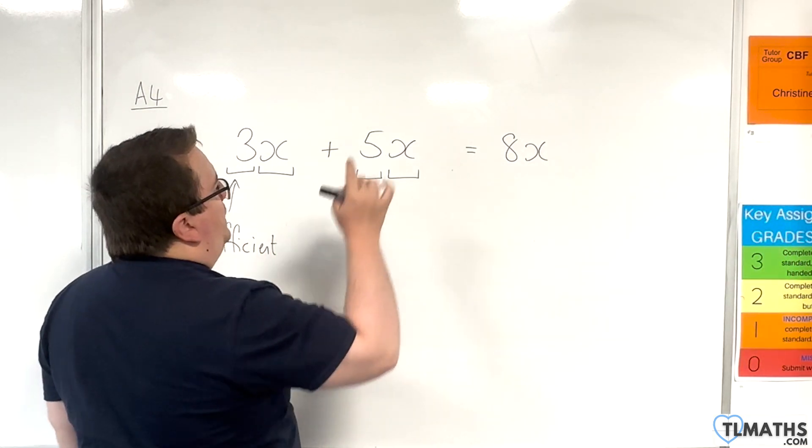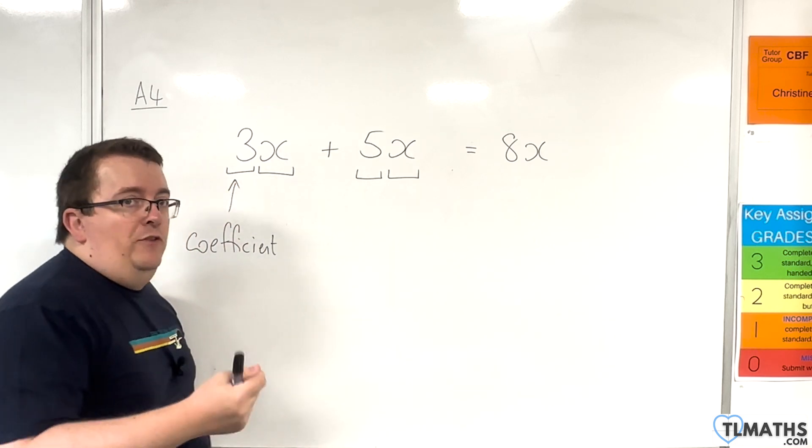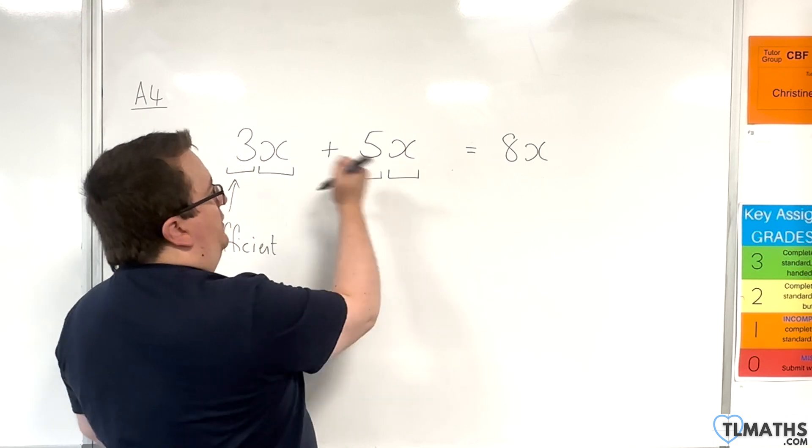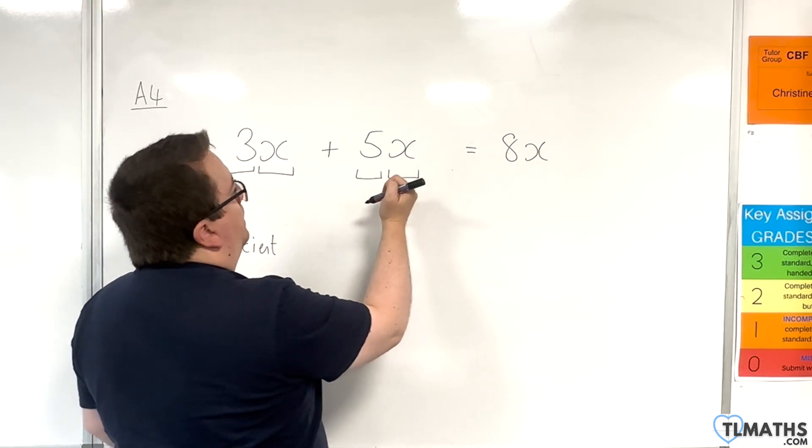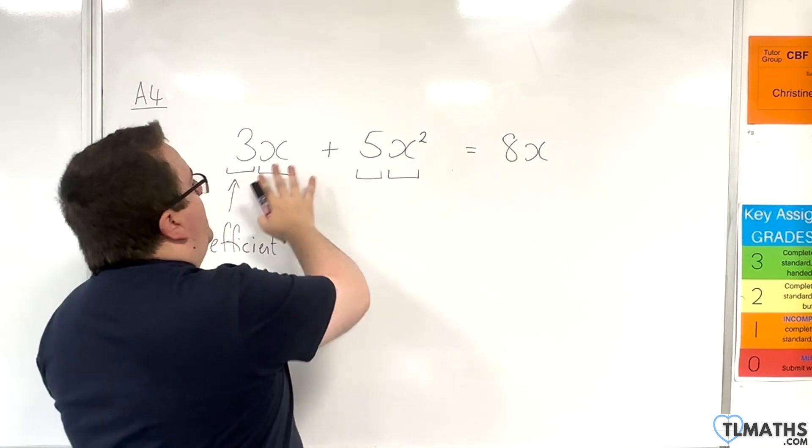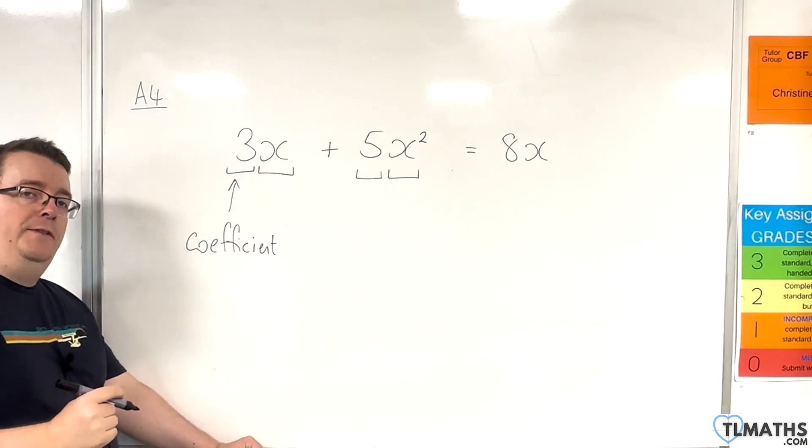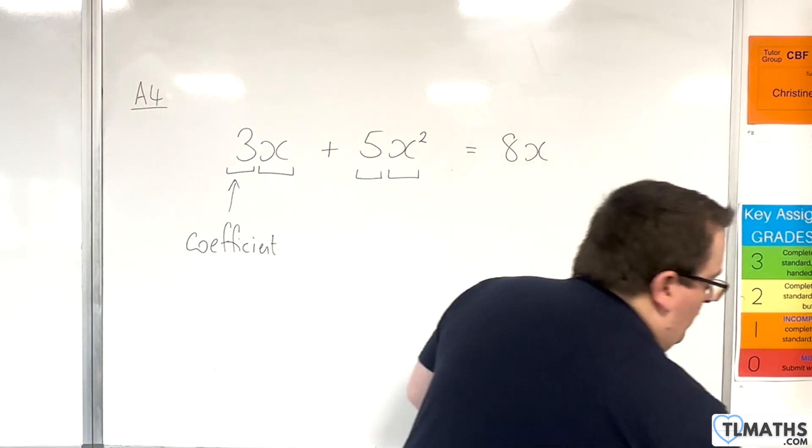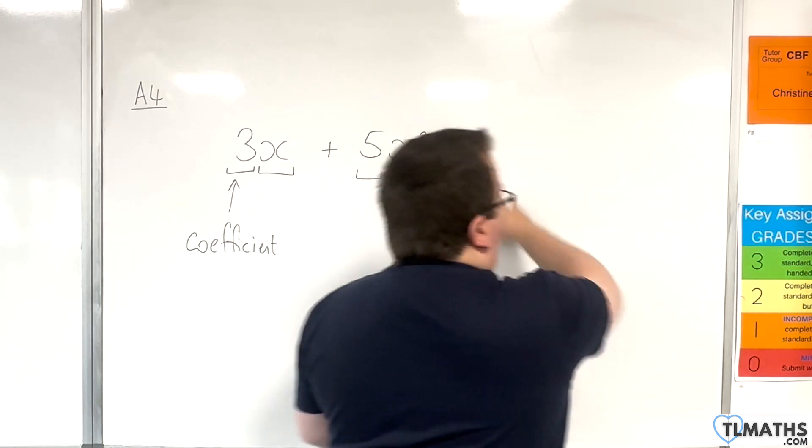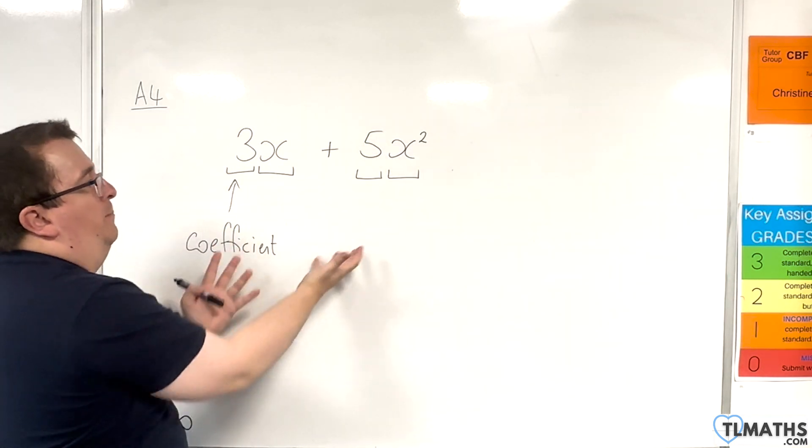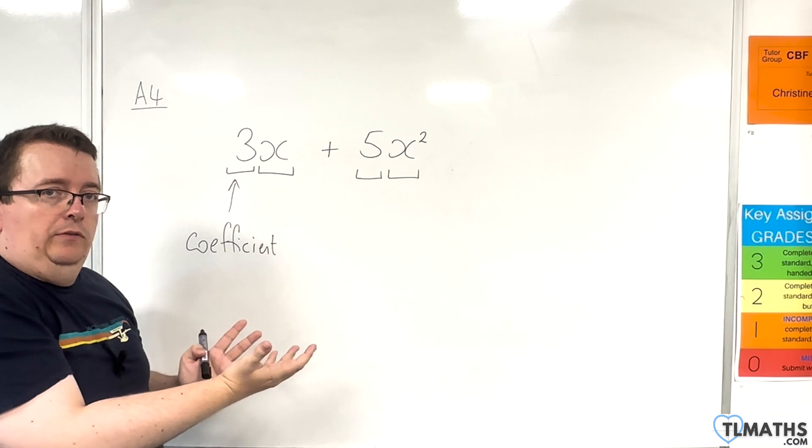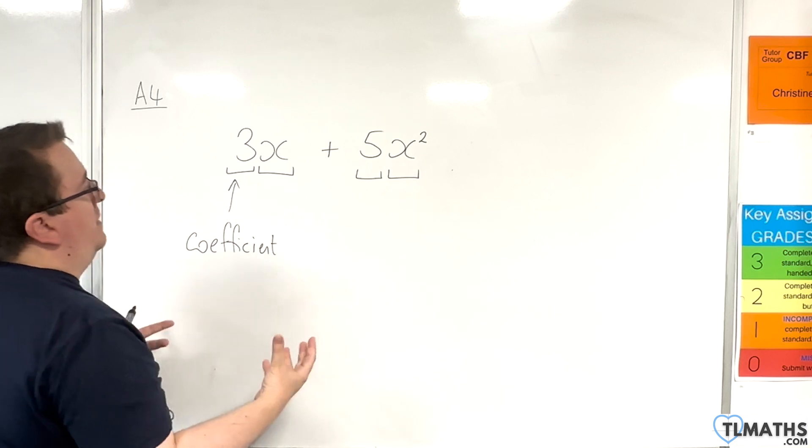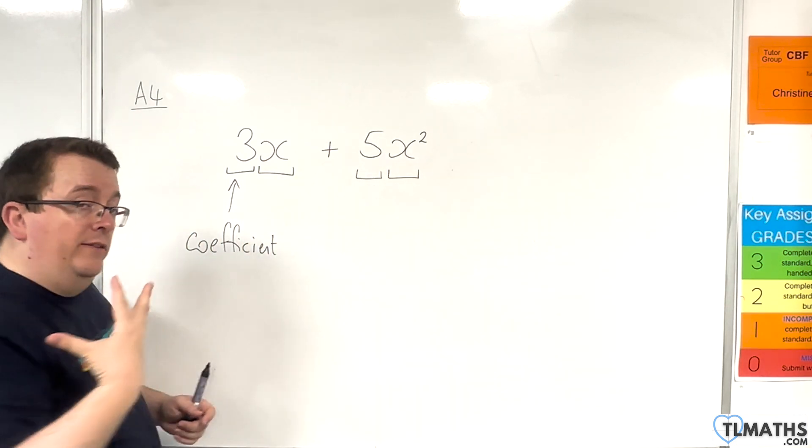Now, if the algebra bit is slightly different, and it doesn't matter how slightly different it is, you cannot combine the terms, you cannot collect them. So if I change this to 3x plus 5x squared, the algebra bit is different. And so we cannot collect them. In fact, this is as simplified as I can write this. So 3x, 5x squared cannot be combined because the x and the x squared are different.